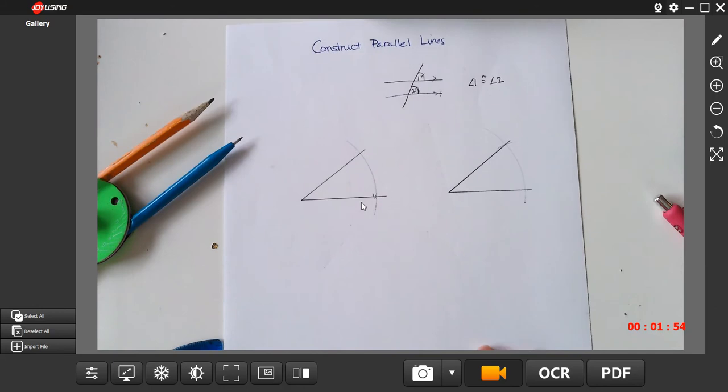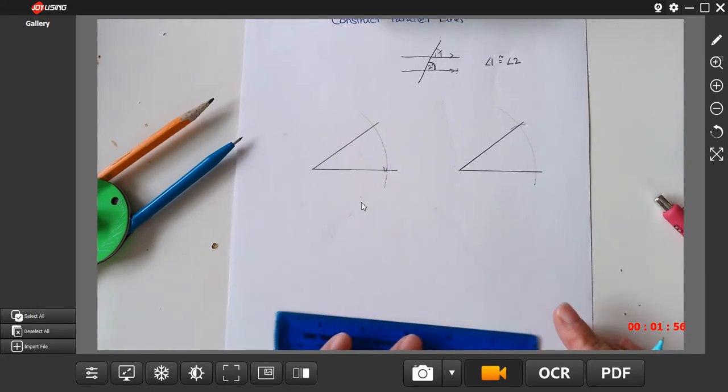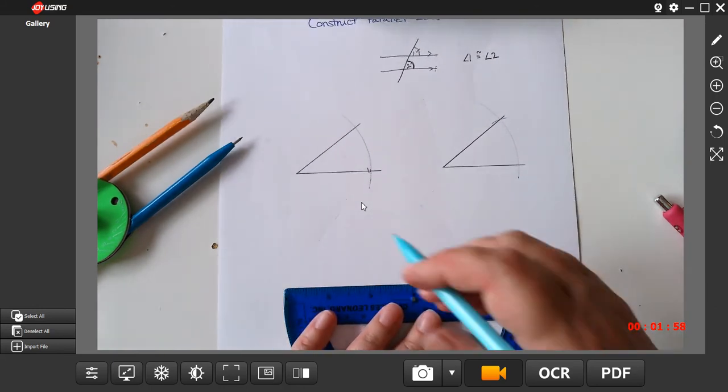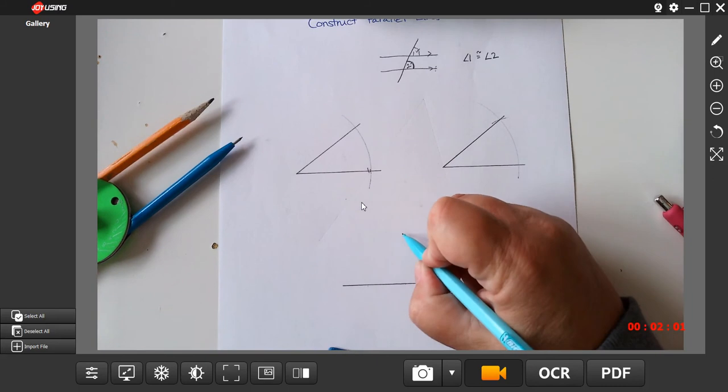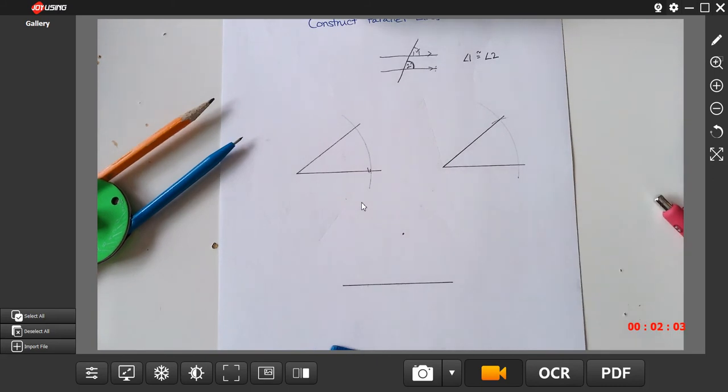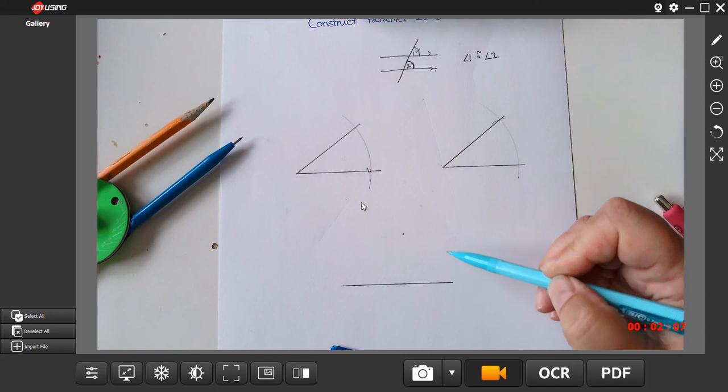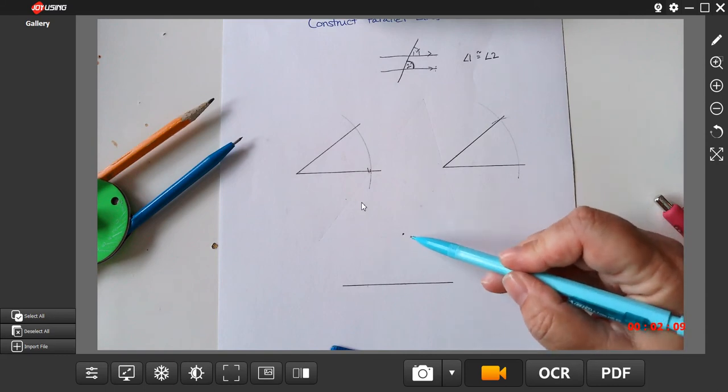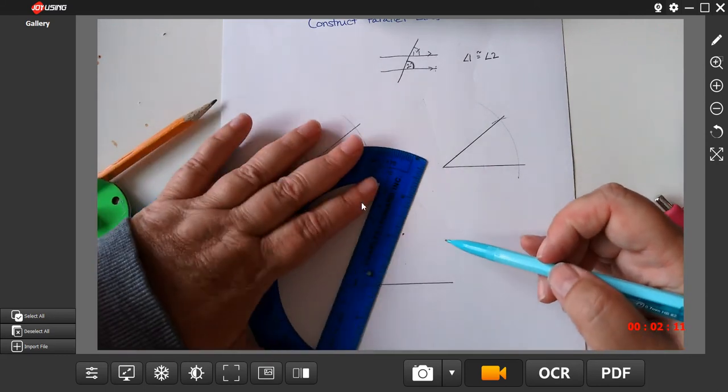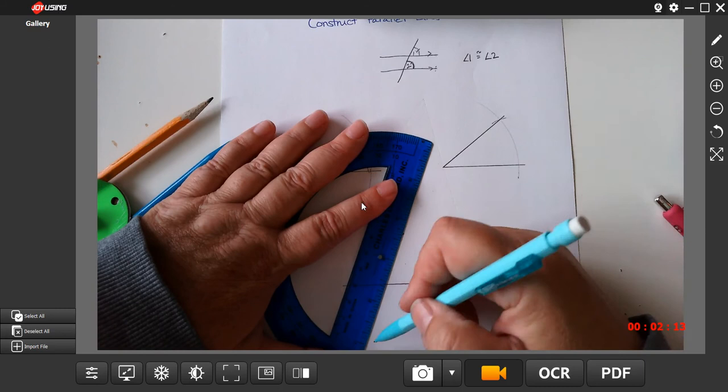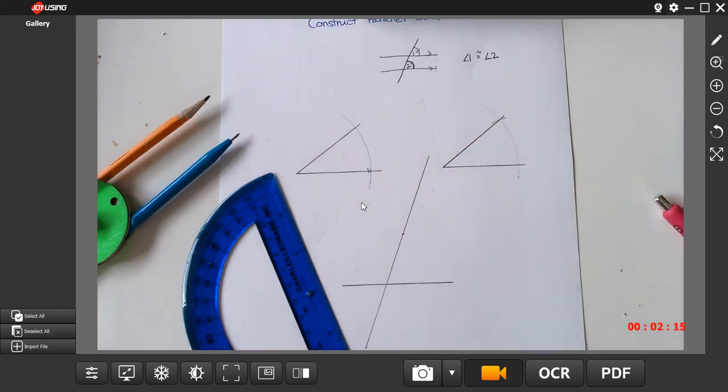Okay, so that's the idea we're going to use. So I'm going to start with a line and I'm going to put a point not on the line. Okay, so I'm going to create a line that is parallel to my original that passes through this point. So the first thing I'm going to do is I'm going to create a transversal, a transversal that goes through that point.